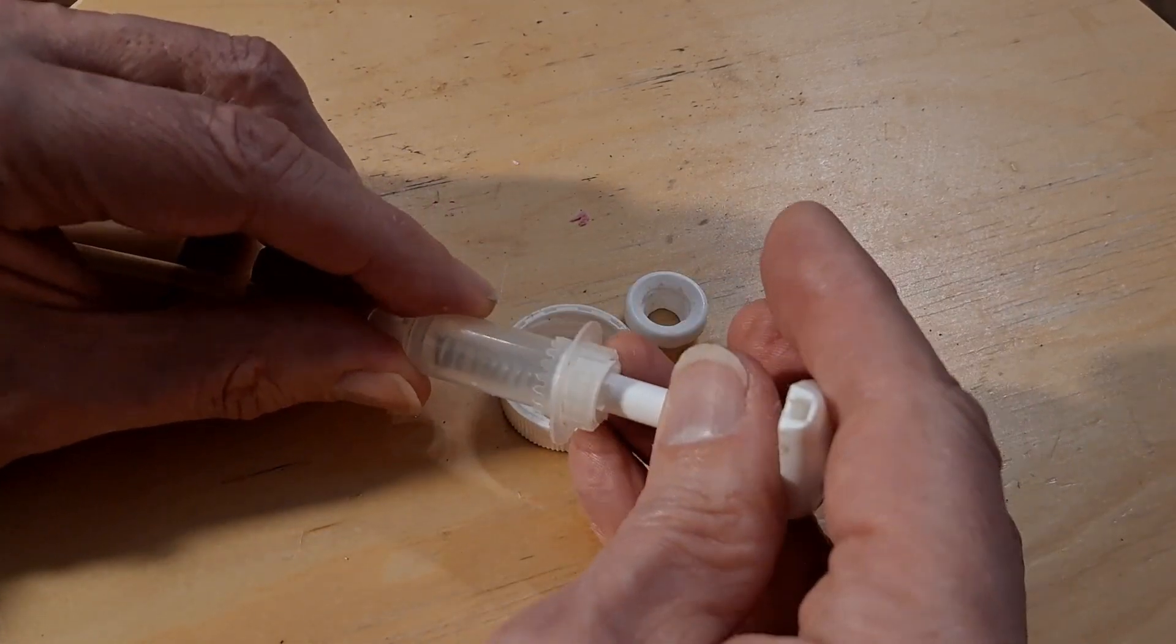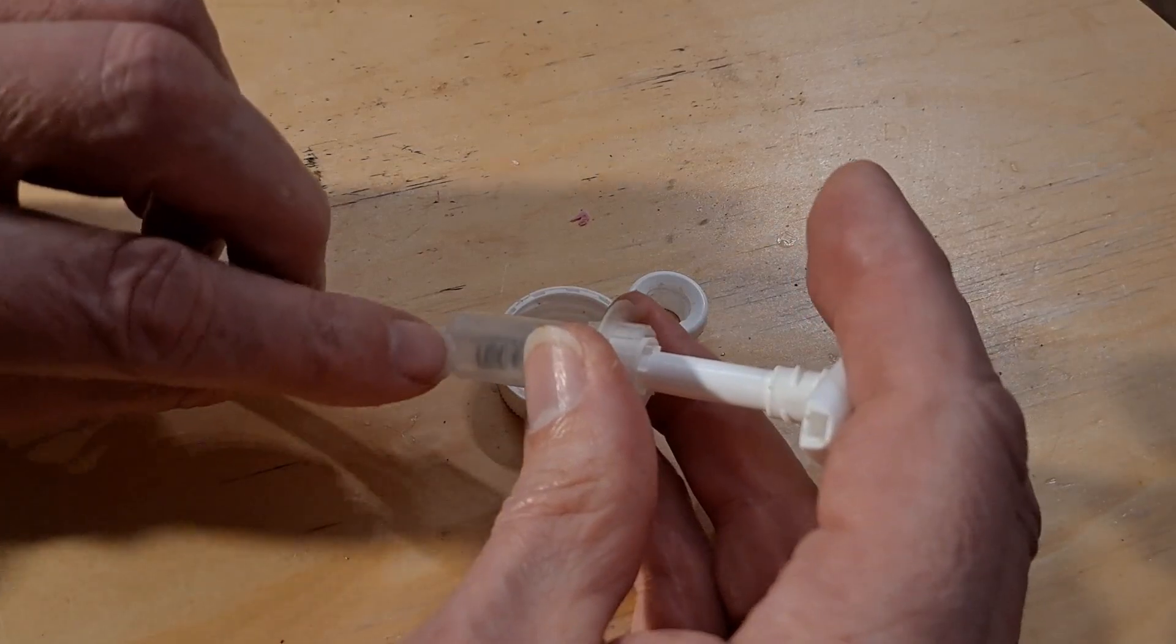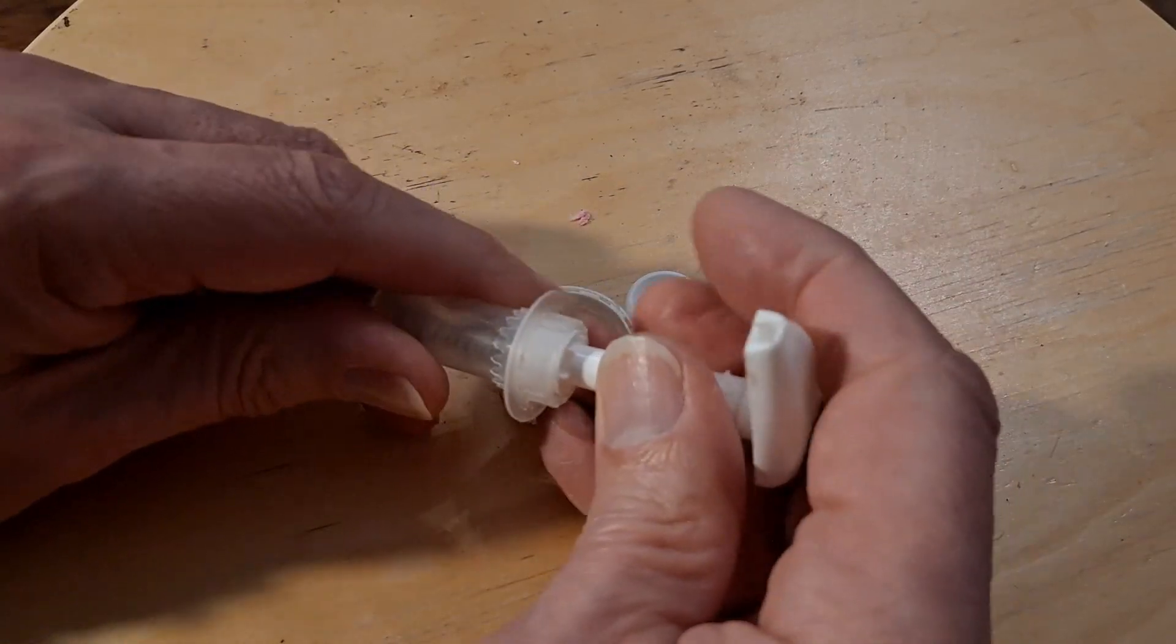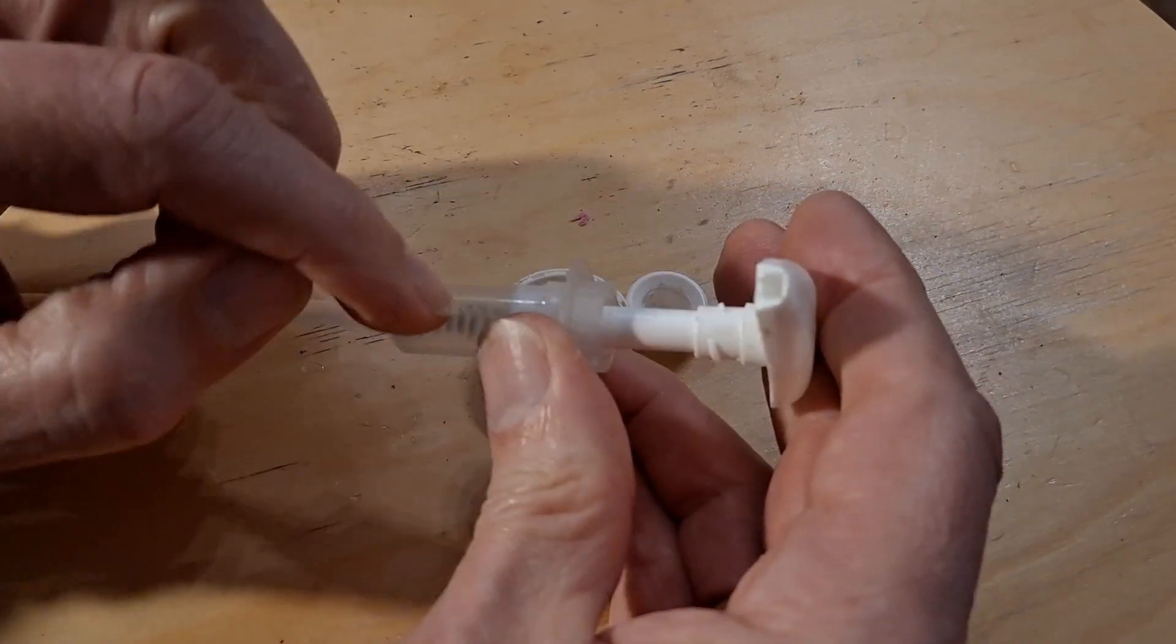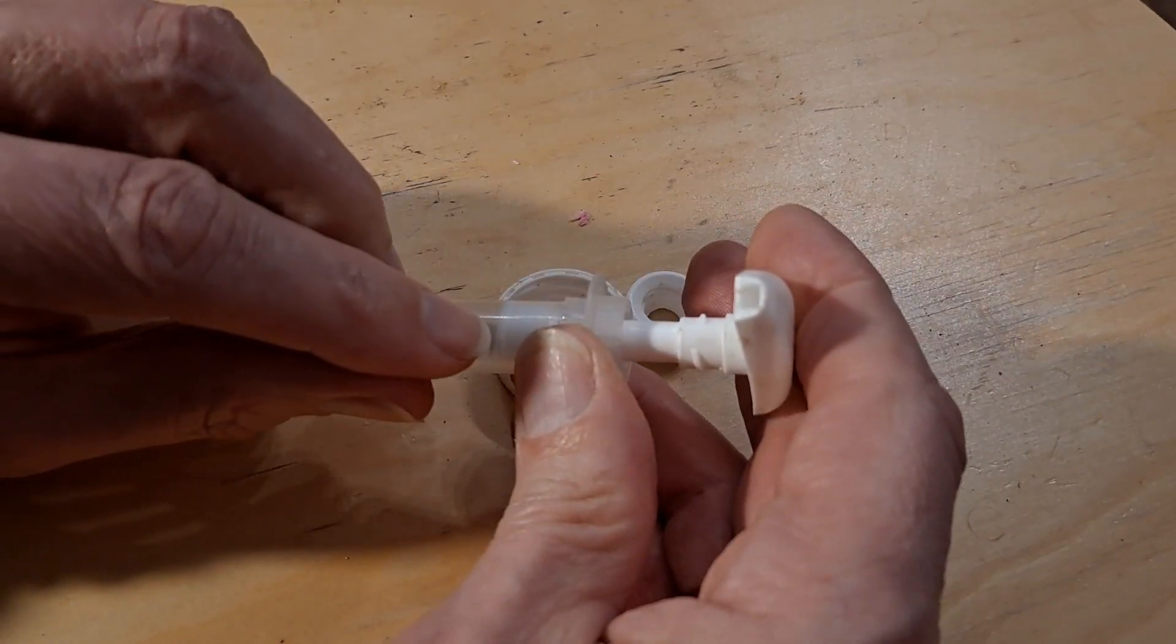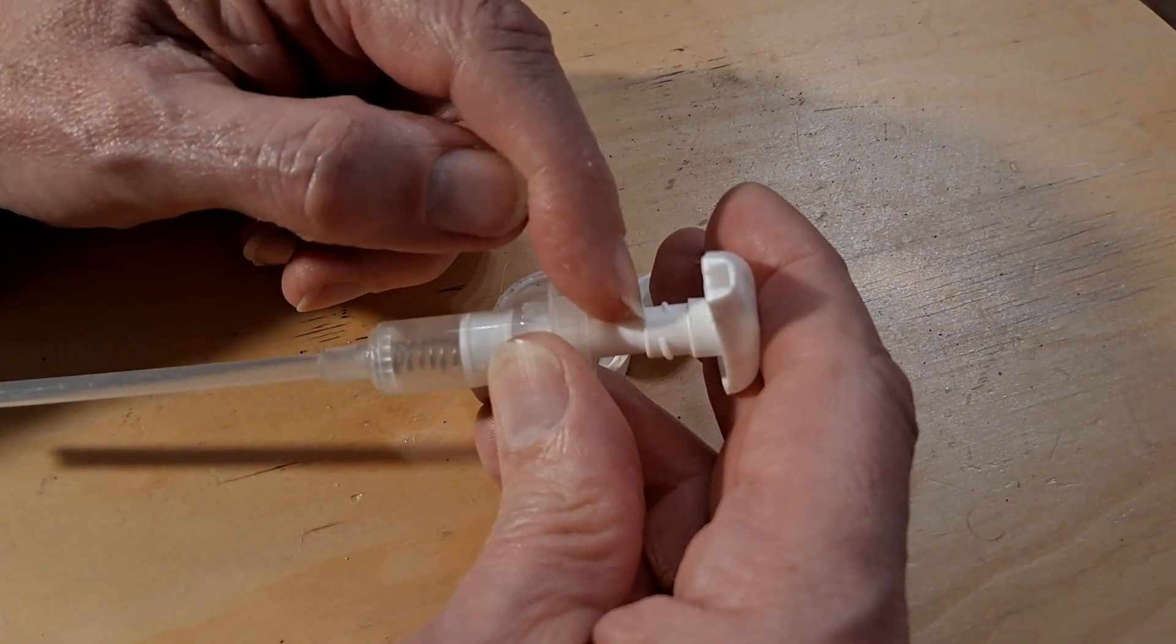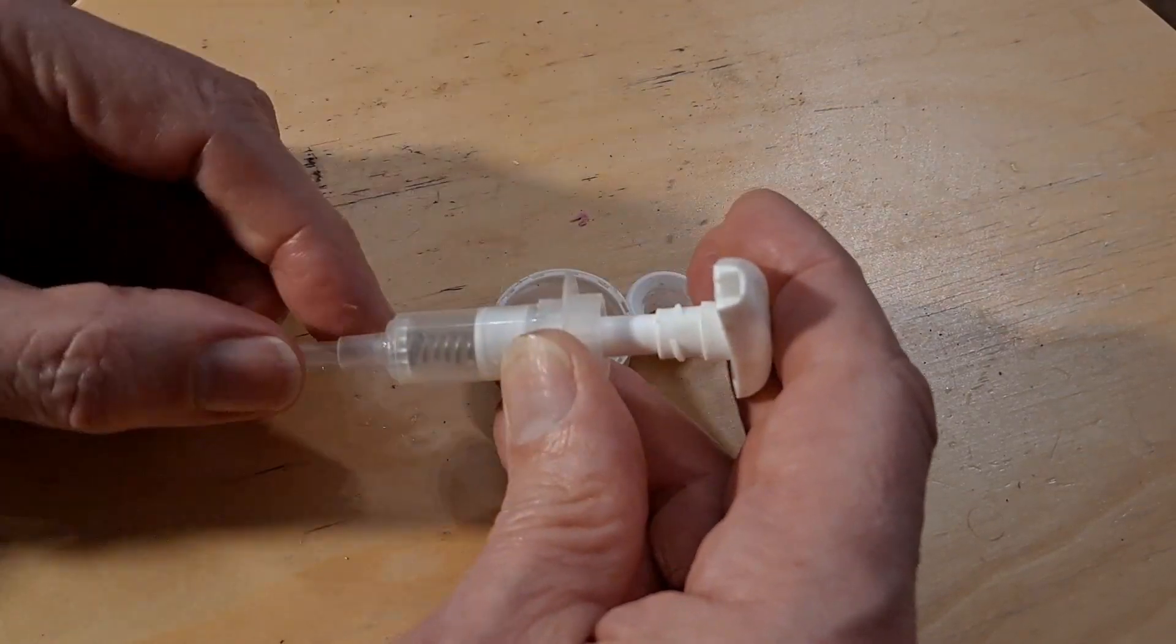Then when you push that down again, the liquid can't escape because the ball at the bottom there is sitting over the hole and that seals it. But pushing it, the liquid can push up through past the ball there that's lifted off its seat and comes out of there.